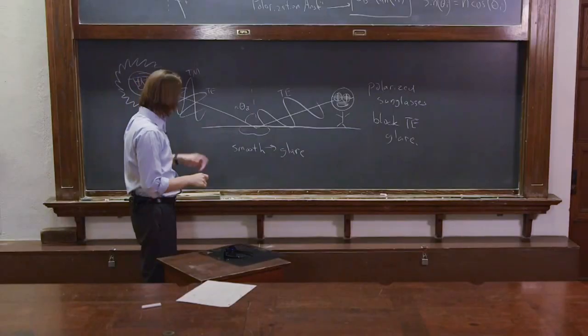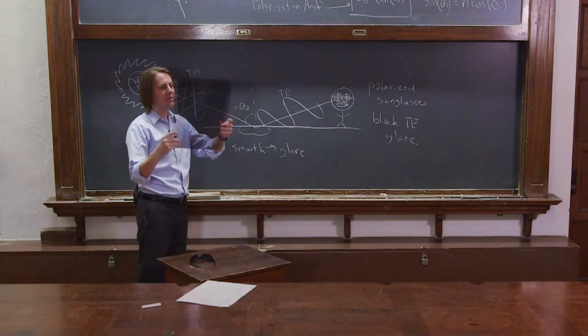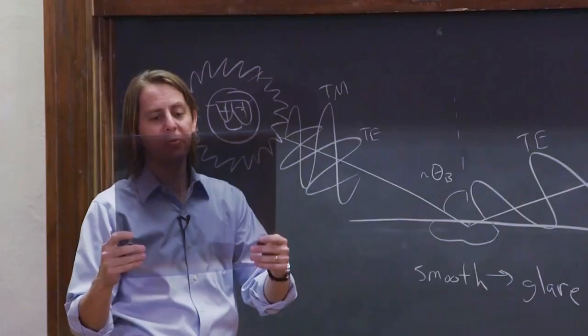So this is how sunglasses work. I can actually show it to you by putting some big sunglasses on the camera. So this is just a giant piece of what we would call Polaroid. It's a Polaroid film. It really is just a big polarizer.